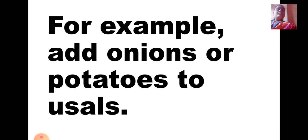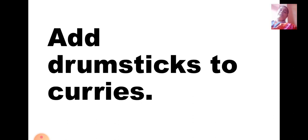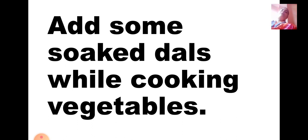For example, add onions or potatoes to usal, or add tomatoes and onions to dal. Add drumsticks to curries — drumstick is a very healthy vegetable which you can add to dal or other curries. Also, add some soaked dals while cooking vegetables. You can add tur dal, moong dal, or masur dal to various kinds of vegetables. Try it out and see.